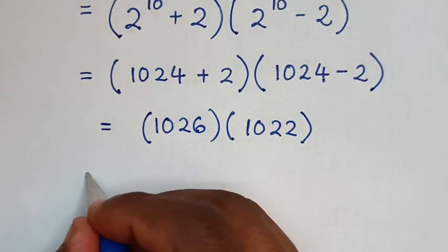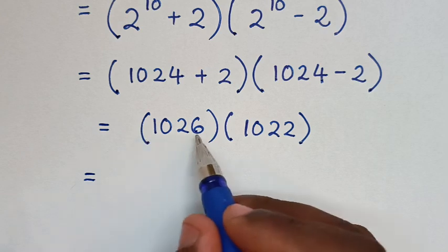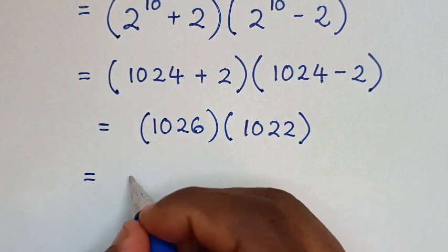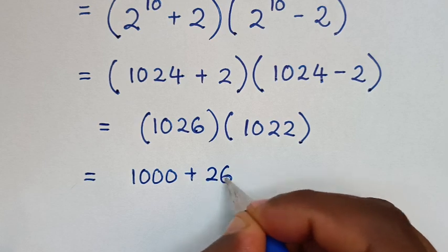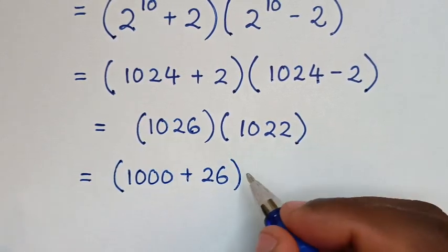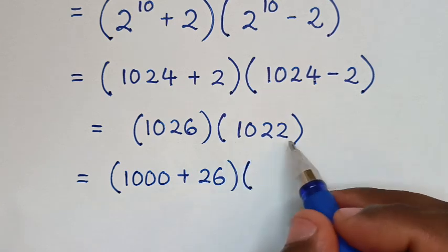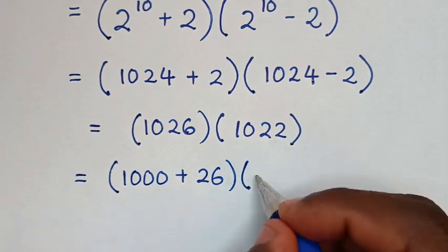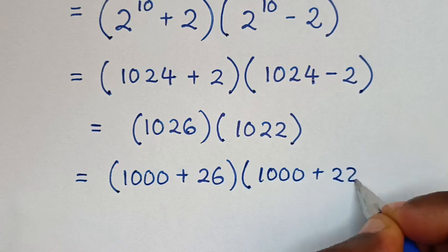So it will be equal to 1026, we want to make 1000 in common. So this is same as 1000 plus 26, times 1000 plus 22.